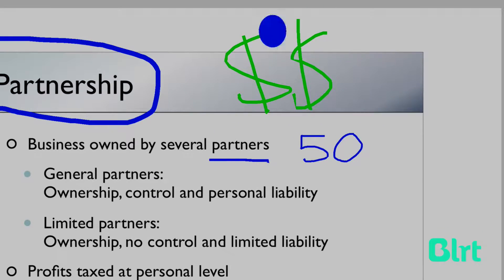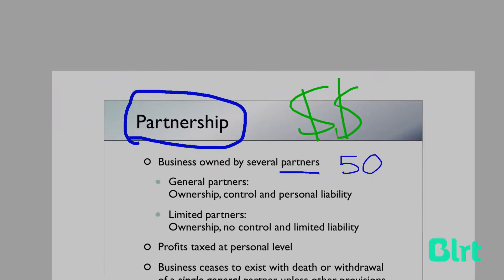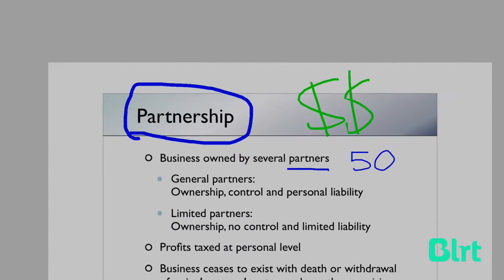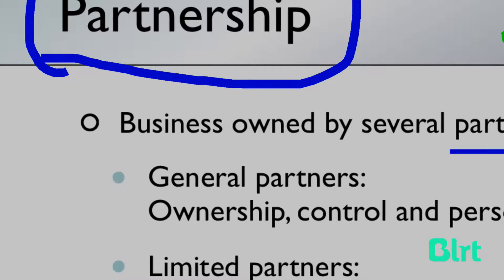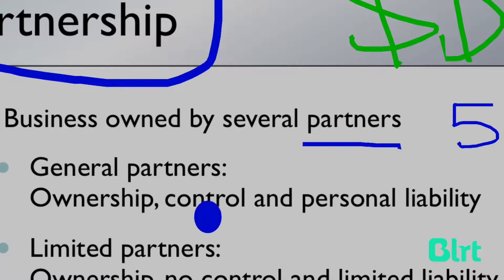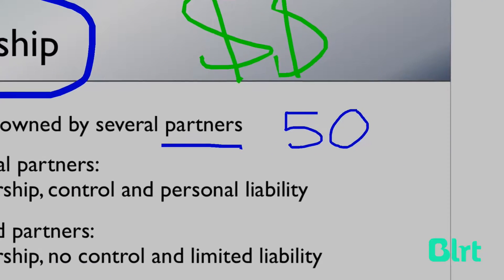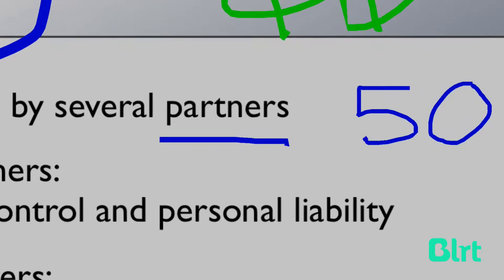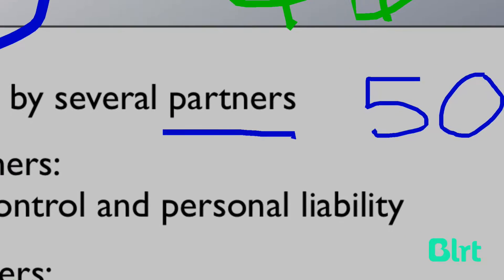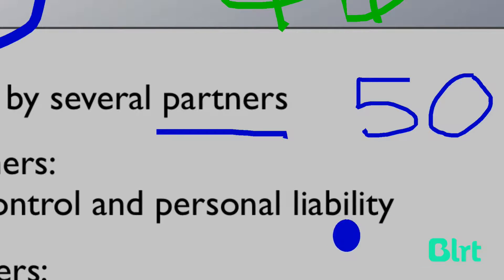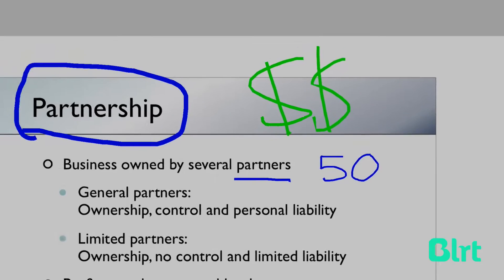What about our two brilliant entrepreneurial students? They would be general partners because they have ownership of the company, control of the company, and if the company goes bankrupt, they are personally liable and have to pay with their own assets.